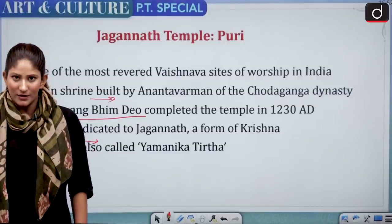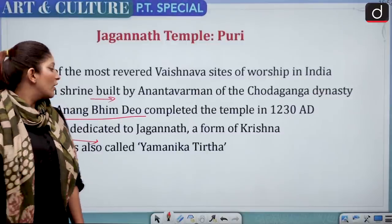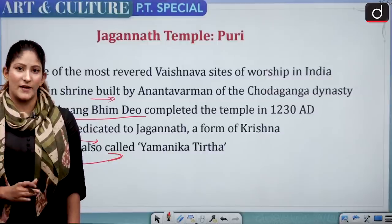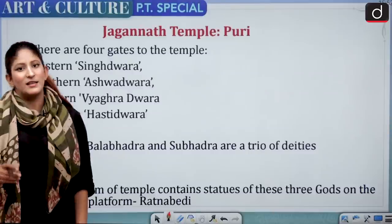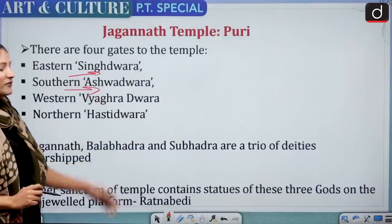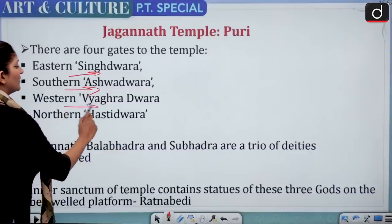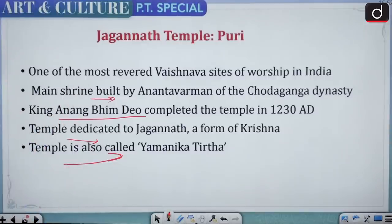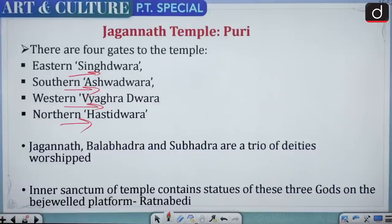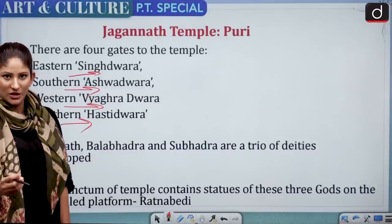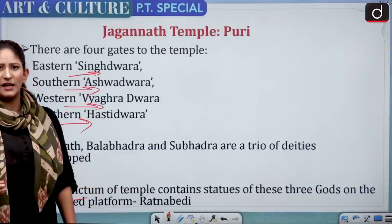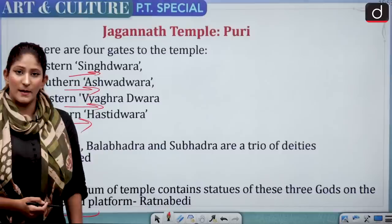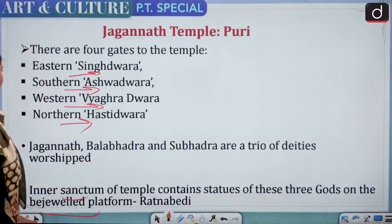The temple is dedicated to Jagannath, the Lord of the Universe — either a form of Vishnu or Krishna. The temple is also called Yamanika Tirtha, where the power of death is said to be nullified. It has four gates: eastern Singhudwar, southern, western Vyagradwar (horse gate — ashwa), and northern Hastidwar. Jagannath, Balbhadra, and Subhadra are the trio of deities worshipped in the temple.